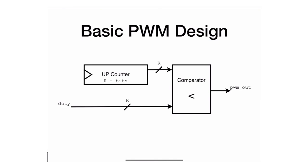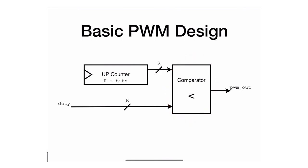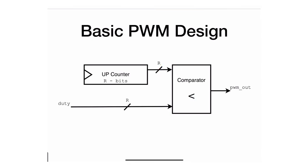The main two components of this design are an up counter of size R bits — that's the resolution — followed by a simple combinational circuit, which is just a comparator. The comparator checks whether the input coming from the counter is less than the duty cycle value; if so, the output is asserted.